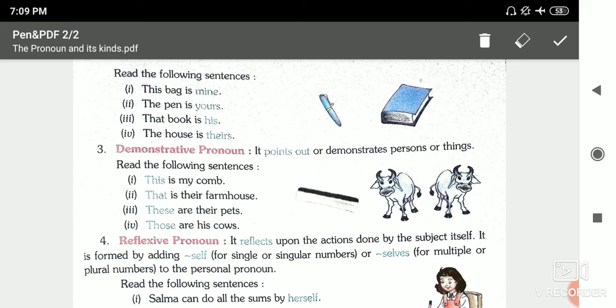These are their pets. Those are his cows. So 'those' is demonstrative pronoun. Now be careful not to get confused. When we say 'this bag' here, 'this bag' is not demonstrative pronoun. But when we say 'this is my bag', then 'this' becomes demonstrative pronoun. Don't be confused about this.